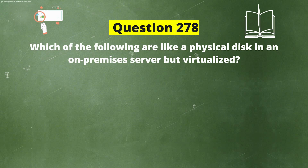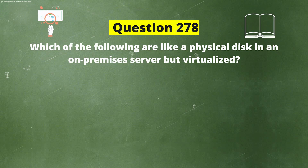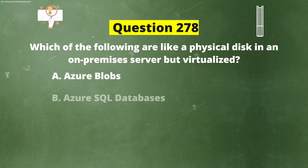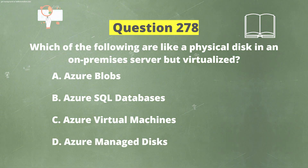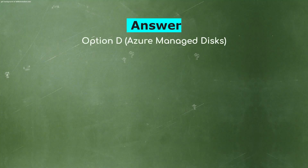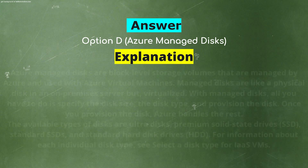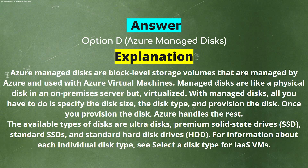Next question: Which of the following are like a physical disk in an on-premises server but virtualized? The options are: A) Azure Blobs, B) Azure SQL Databases, C) Azure Virtual Machines, D) Azure Managed Disk. The correct answer is option D, Azure Managed Disk. Explanation: Azure Managed Disks are block-level storage volumes managed by Azure and used with Azure virtual machines. They are like a physical disk in an on-premises server but virtualized. You only need to specify the disk size, disk type, and provision the disk — Azure handles the rest.